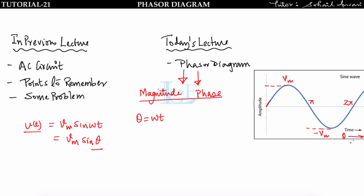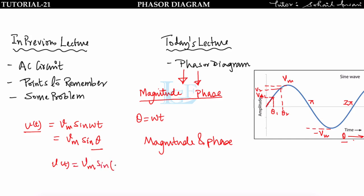The value of the sine wave varies with respect to θ, where θ is the phase. At θ = θ₁ the magnitude is Vm1, and at θ = θ₂ the magnitude is V2. So this sine wave can be represented in terms of magnitude and phase. For example, V(t) = Vm·sin(ωt + 30°) can be represented in phasor form as Vm∠30°. This is known as phasor representation.